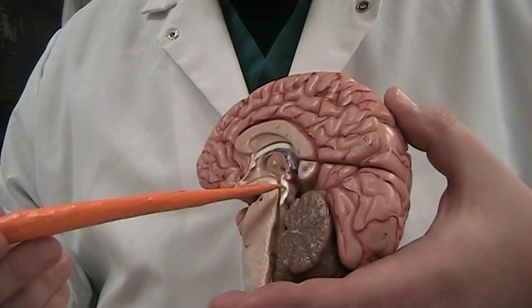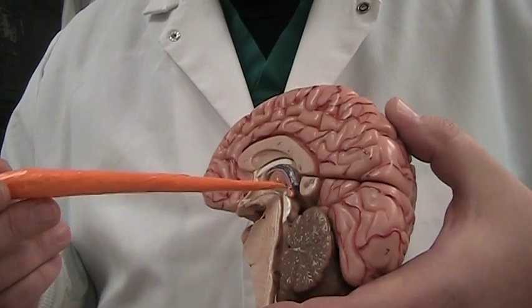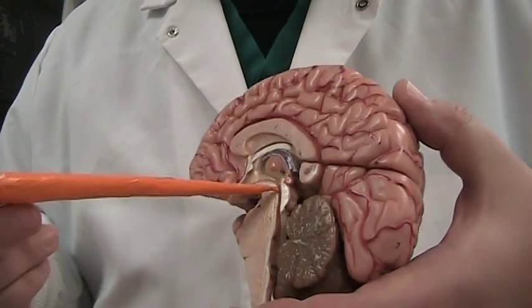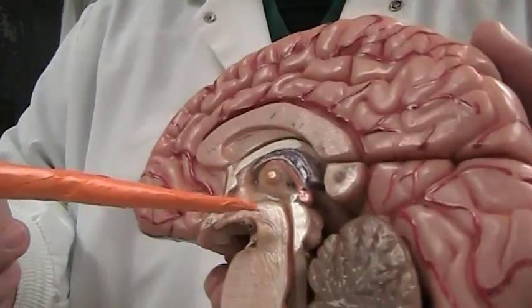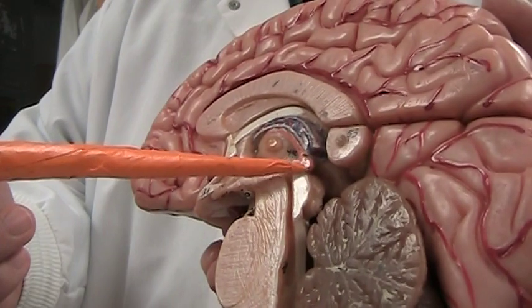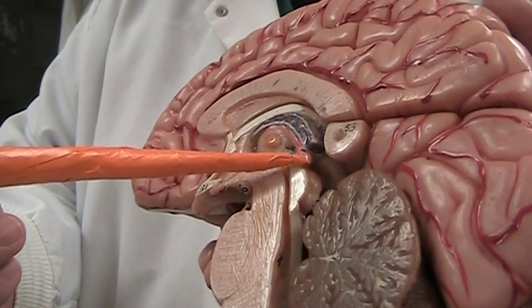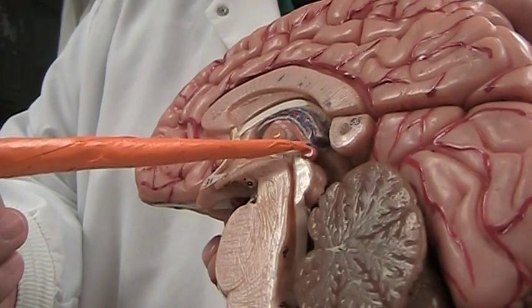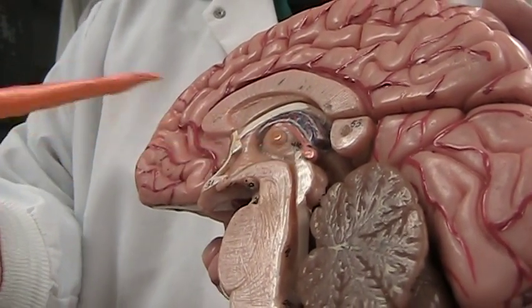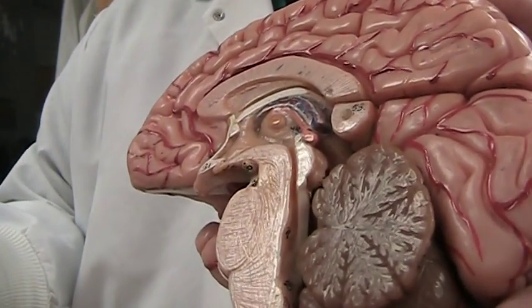Right above this, you have a midline structure, this is part of our endocrine system, the pineal gland. It's actually like a little acorn, that's what its actual shape is.